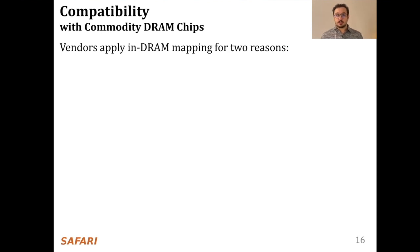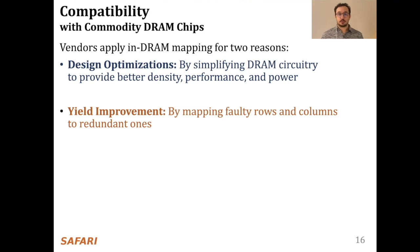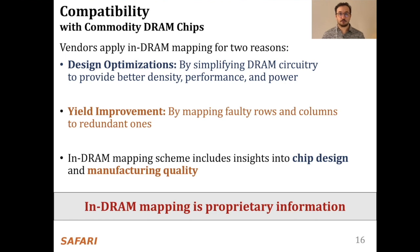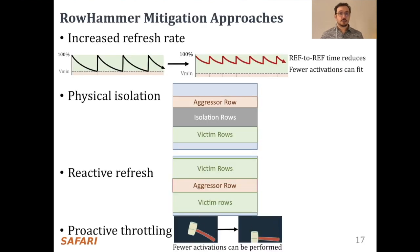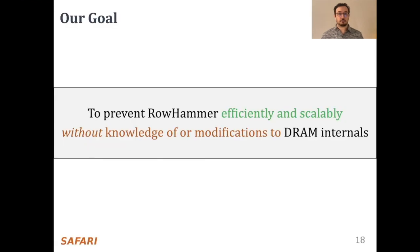DRAM vendors apply this in-DRAM mapping for two reasons: to enable circuit design optimizations to meet density, performance, and power constraints, and for improving yield by mapping faulty rows and columns to redundant ones. Therefore, in-DRAM mapping includes insights into chip design and manufacturing quality, and that is why it is proprietary information. Unfortunately, physical isolation and reactive refresh need this proprietary information to identify which rows to isolate or refresh. To address these two challenges, our goal is to prevent row hammer efficiently and scalably without knowledge of or modifications to DRAM internals.